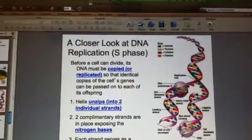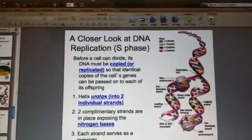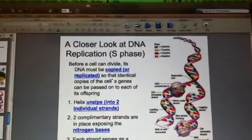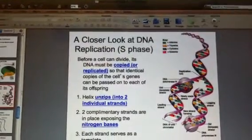Before a cell can reproduce, it has to first replicate. It means make a Xerox copy of its DNA. And this occurs in animal cells in the nucleus. So all this is going on in the nucleus of the cell.